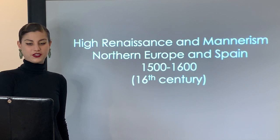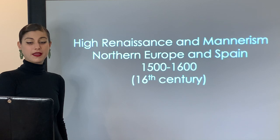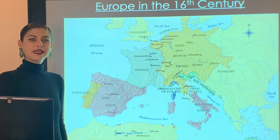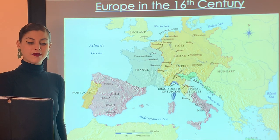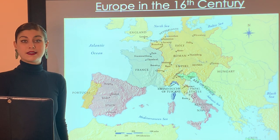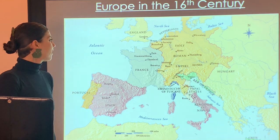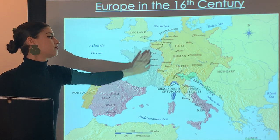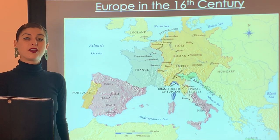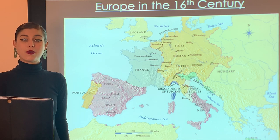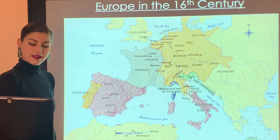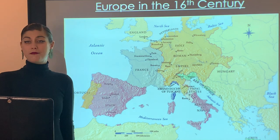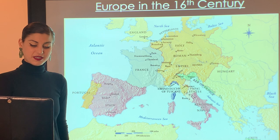Hello and welcome to today's lecture on the High Renaissance and Mannerism in Northern Europe and Spain. Looking at the map, we can see that by the early 16th century, Europe's political landscape had realigned. France and the Holy Roman Empire had absorbed the former Burgundian territories, which helped them increase their power and wealth. Spain ends up becoming a very dominant player during the 16th century in Europe.